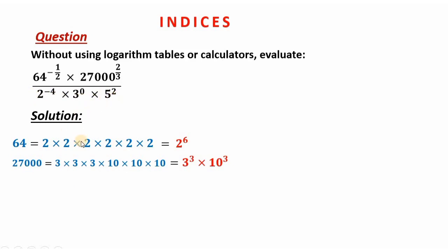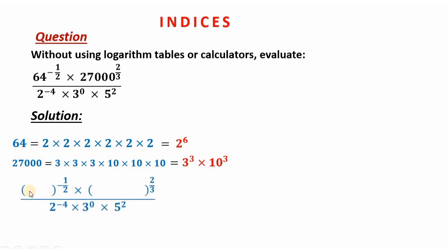The next thing is to substitute these values in their simplest form. 64 is already expressed as 2 to the power 6, and 27,000 as 3 power 3 times 10 power 3. We replace them in the problem: in the first bracket we write 2 power 6, and in the second bracket we write 3 power 3 times 10 power 3.